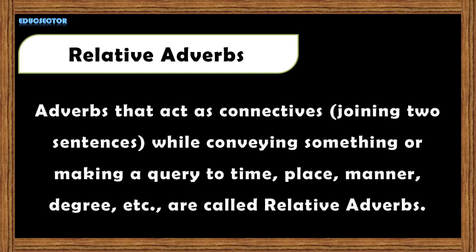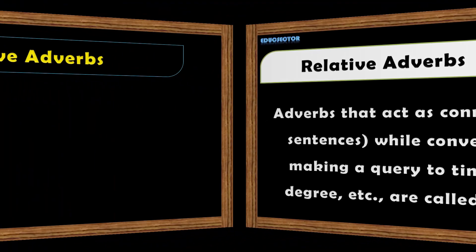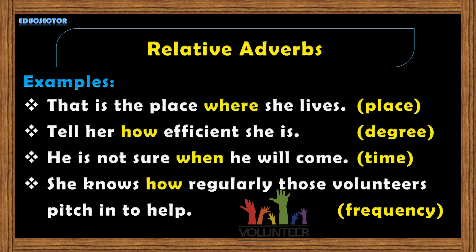Relative adverbs are adverbs that act as connectives, joining two sentences while conveying something or making a query to time, place, manner, degree etc. For examples: 'That is the place where she lives' — here where represents place. 'Tell her how efficient she is' — here how represents degree. 'He is not sure when he will come' — here when represents time. 'She knows how regularly those volunteers pitch in to help' — here how represents frequency.